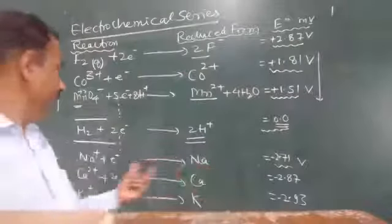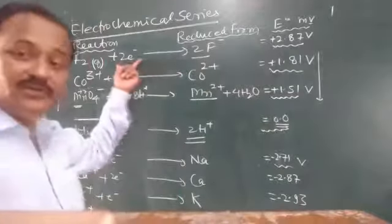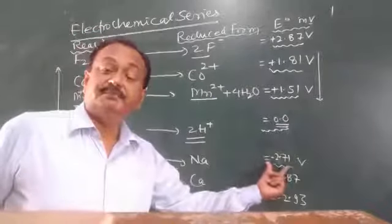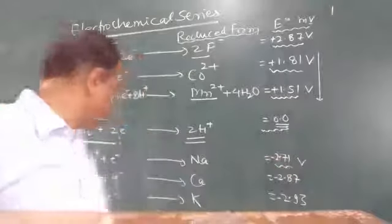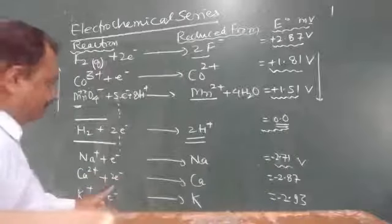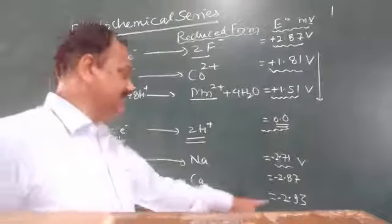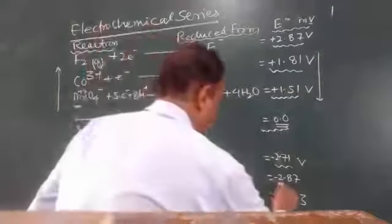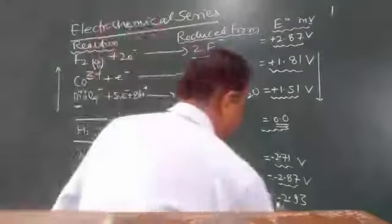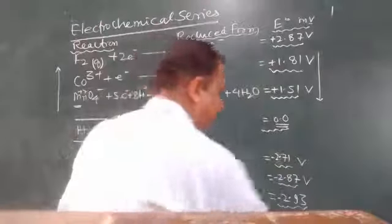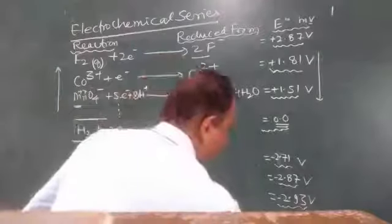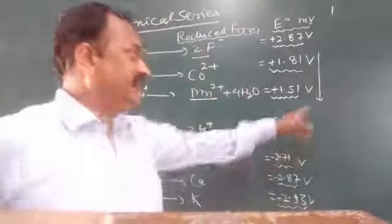Sodium at −2.71 volts gets electrons, but with a negative value. Here calcium — calcium gives up two electrons; its value is around −2.87 volts. Potassium here is −2.93 volts. Lithium here is −3.05 volts.